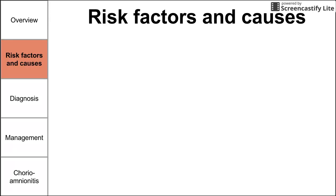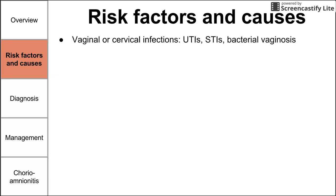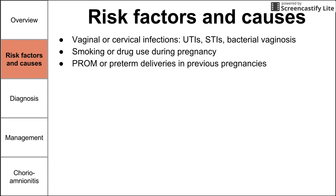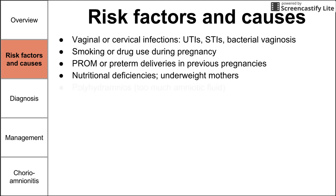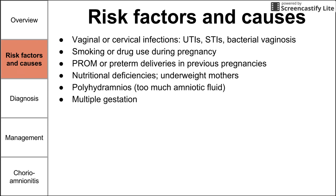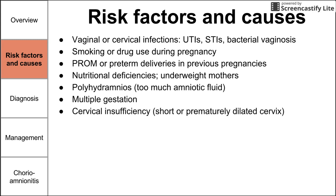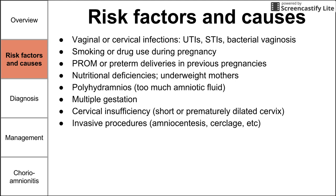Risk factors for PROM include vaginal and cervical infections like UTIs, STIs, and bacterial vaginosis. Smoking or drug use during pregnancy, a prior history of PROM or preterm delivery, and nutritional deficiencies or being underweight also increase risk. Additional risk factors include polyhydramnios, multiple gestations, cervical insufficiency such as a short or prematurely dilated cervix, and invasive procedures like amniocentesis or cerclage placement.